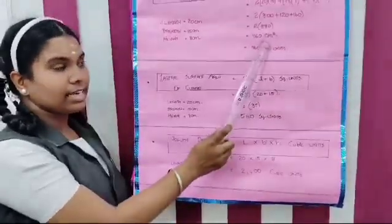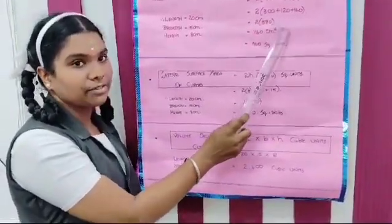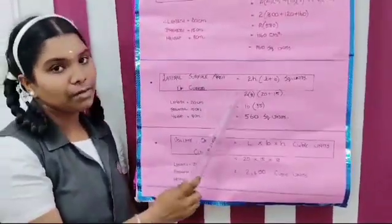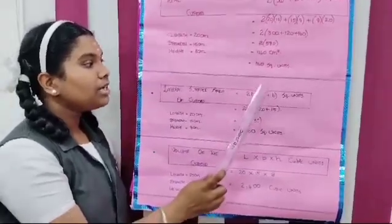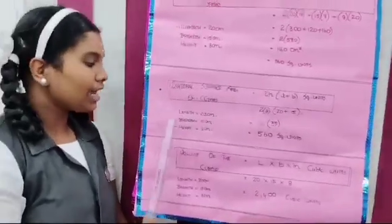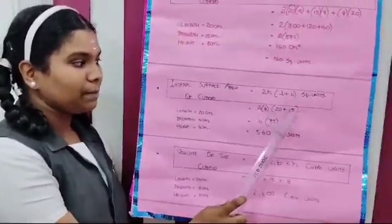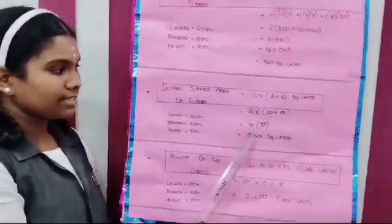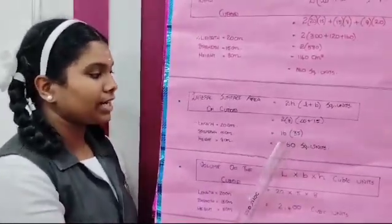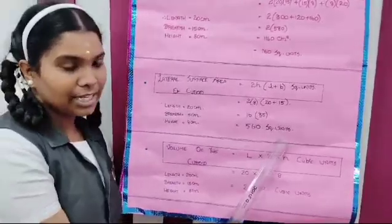So, total surface area of the cuboid is equal to 1160 cm². Next, we calculate the lateral surface area of a cuboid. Lateral surface area of a cuboid is equal to 2 × height × (length + breadth) square units. Here, length is 20, breadth is 15 and height is 8. So: 2 × 8 = 16, and 20 + 15 = 35. Multiplying 16 by 35, we get 560. Lateral surface area of the cuboid is equal to 560 square units.